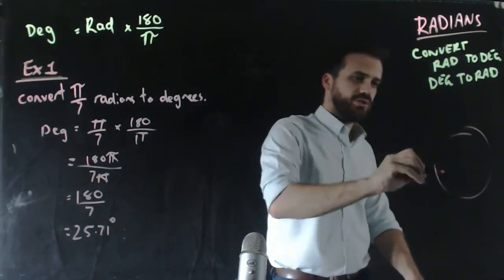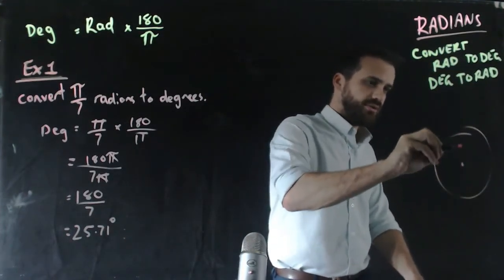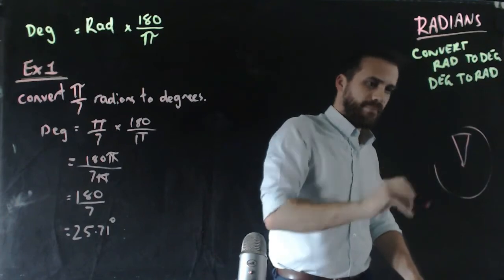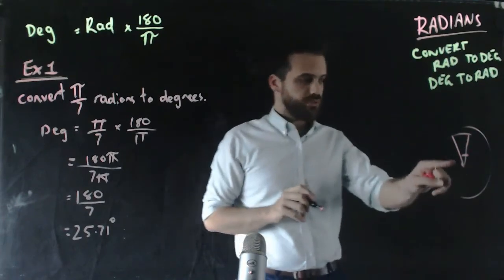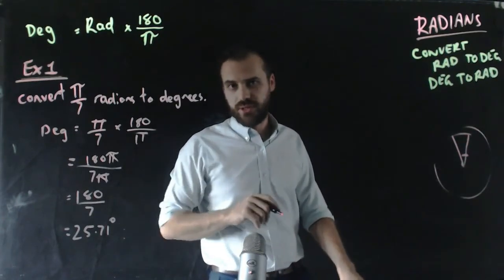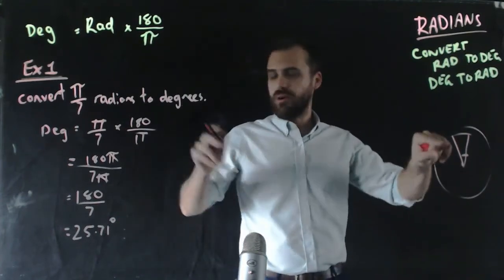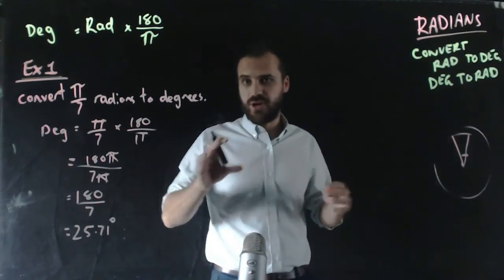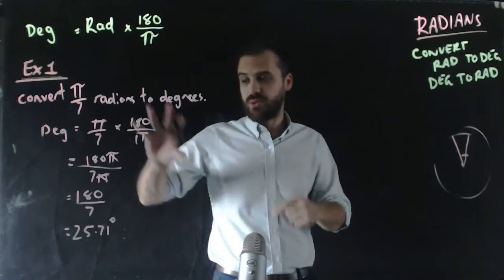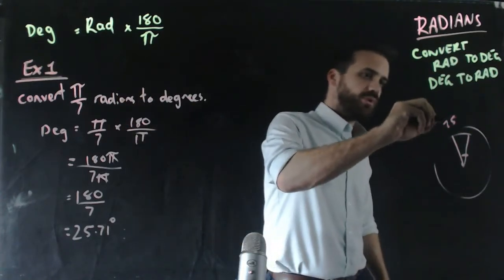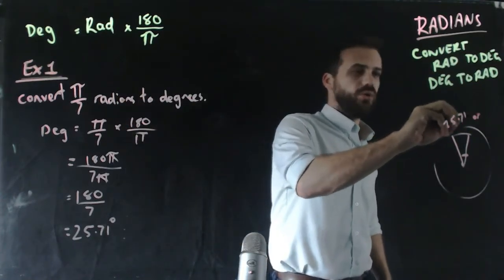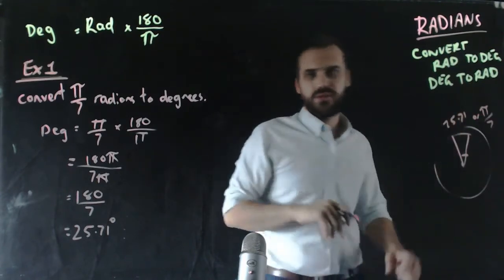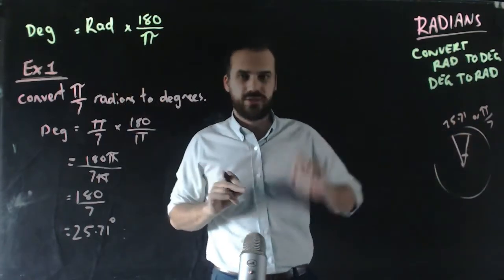If I draw this, here's my circle, here's an angle. That angle is approximately 25.71 degrees, but it's also π/7 radians. They mean the same thing. We're just converting one to the other. 25.71 degrees or π/7 radians.